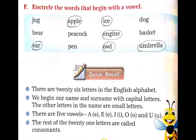Now, we will revise some important topics related to the chapter. There are 26 letters in the English alphabet. English alphabet में 26 letters होते हैं. We begin our name and surname with capital letters. हम अपना name और surname capital letters के साथ शुरू करते हैं. The other letters in the name are small letters. Name में जो other letters होते हैं वे small letters में होते हैं. There are five vowels: A, E, I, O and U. The rest of the 21 letters are called consonants. इसके अलावा जो 21 letters होते हैं वे consonants कहलाते हैं.